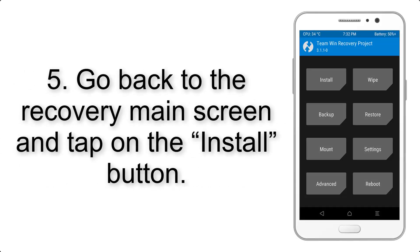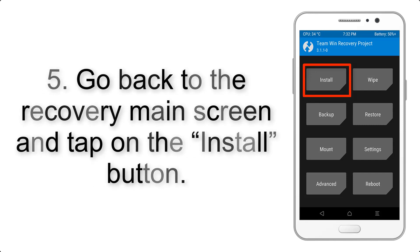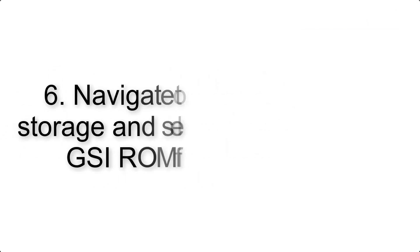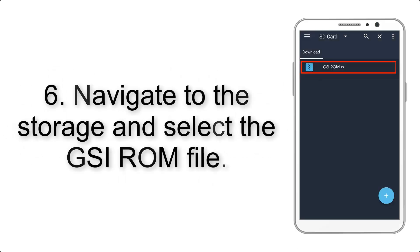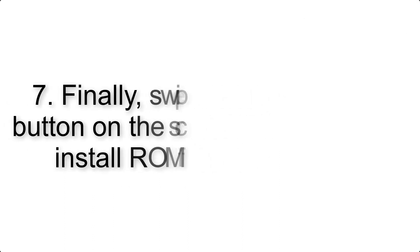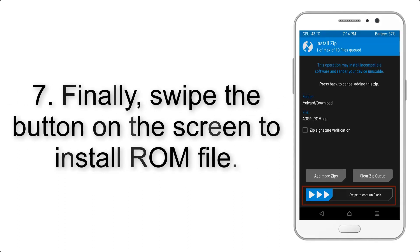Step 4: Swipe the button to wipe the device. Step 5: Go back to the recovery main screen and tap on the Install button. Step 6: Navigate to the storage and select the GSI ROM file.